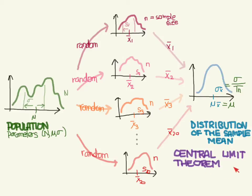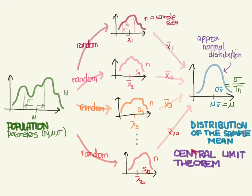So let's review the central limit theorem. Given a population — and it doesn't have to be normal — but it does have a mean of mu and a standard deviation of sigma, and we create a sampling distribution of the mean using samples of size n, we are going to create a new distribution which has a mean equal to the population mean, and a standard deviation equal to the population standard deviation divided by the square root of the sample size. And it's going to be approximately normally distributed. That's what the central limit theorem says.